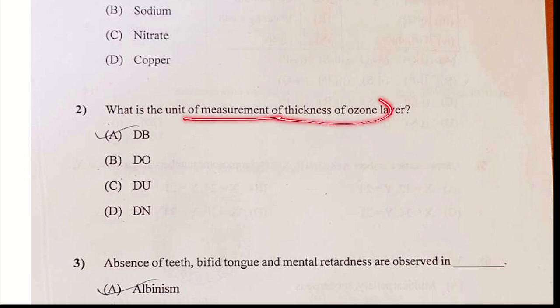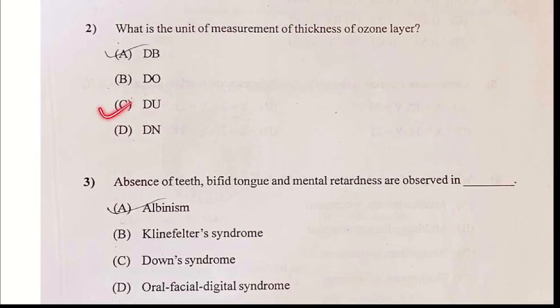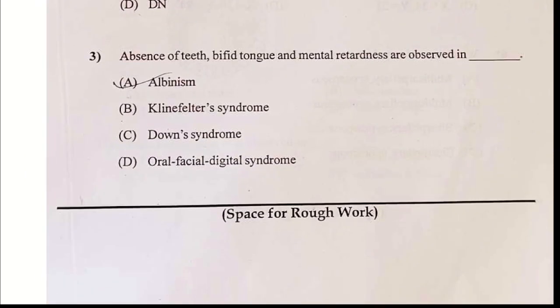What is the unit of measurement of thickness of the ozone layer? Your answer is C — the Dobson unit.